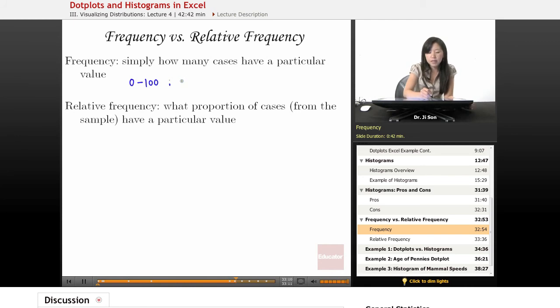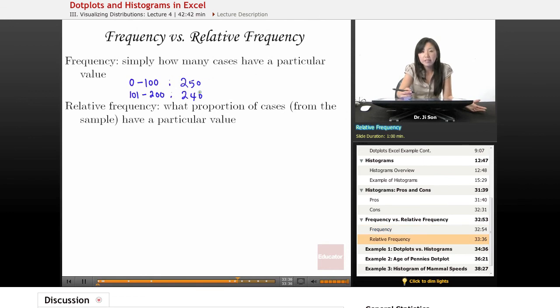Well, maybe it's 250 people. How many cases have a particular value between, let's say, 101 and 200? Maybe that's 240 people. So this is basically what frequency looks like. It's just counting.